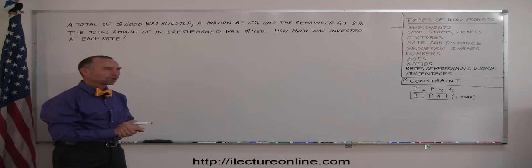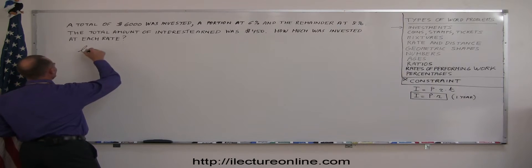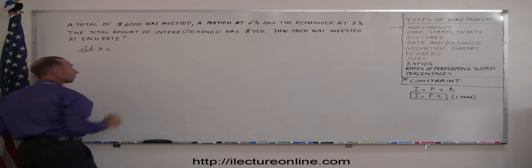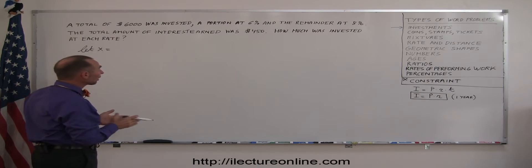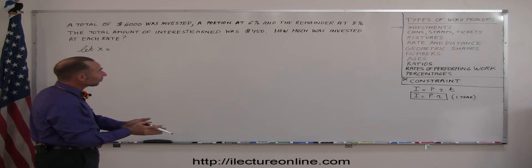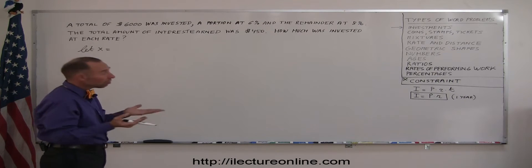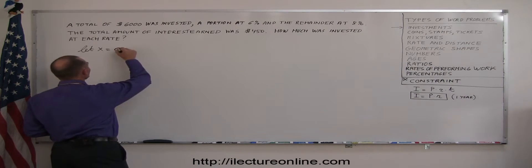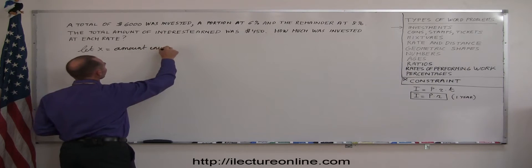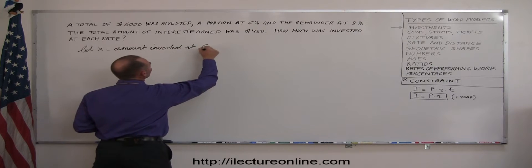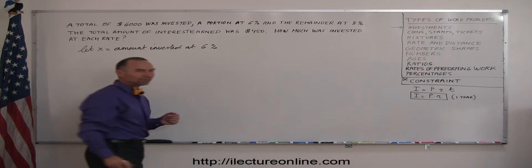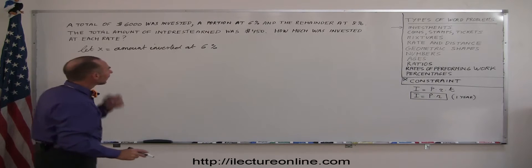All right, so how do we start? Let X equals—now, it's going to equal what? Well, we had $6,000 invested, some of it at 6%, and the remainder at 8%. So, let X equal the amount invested at 6%. Then how do we express the amount invested at 8%?